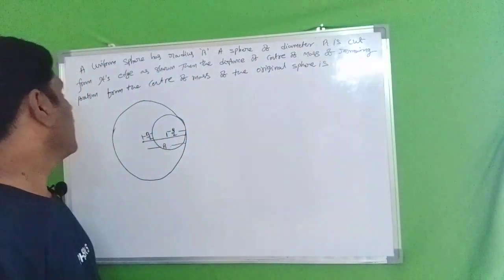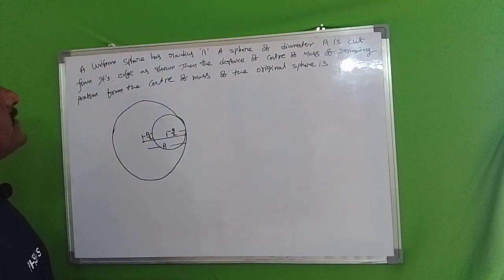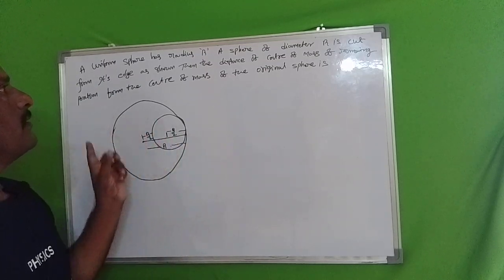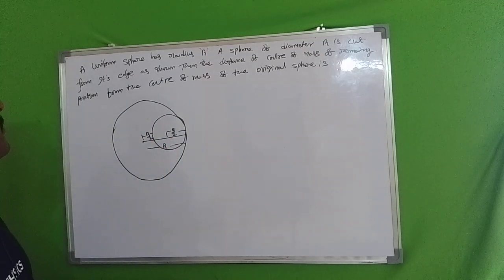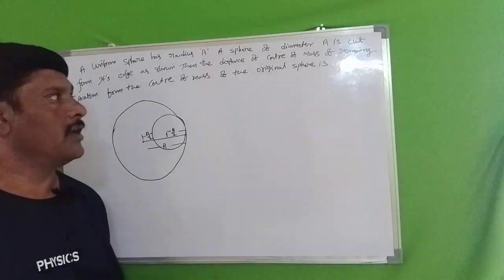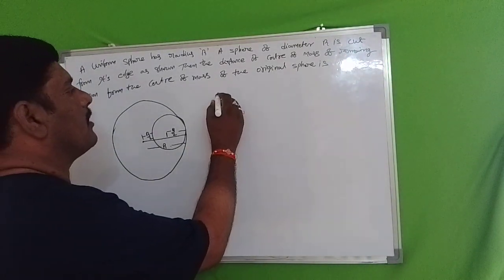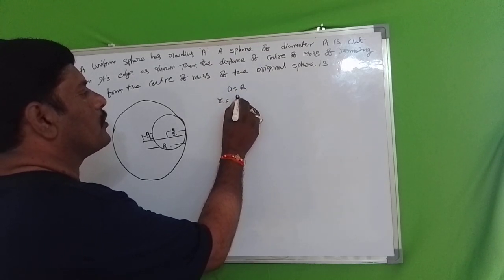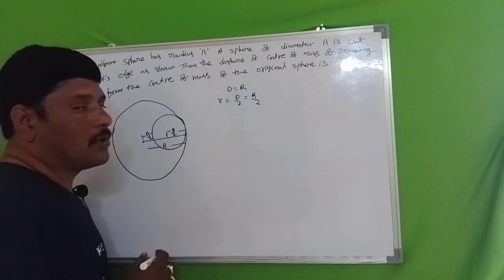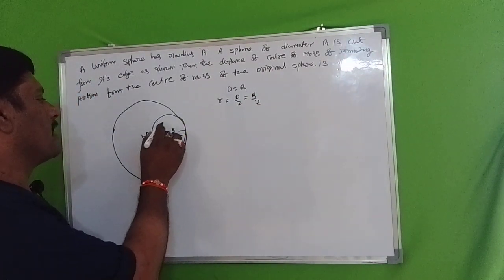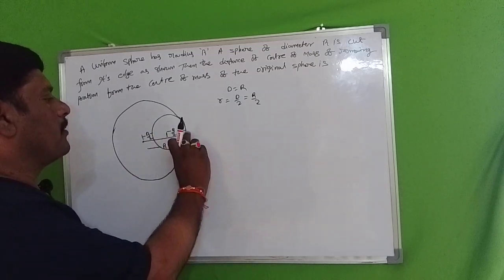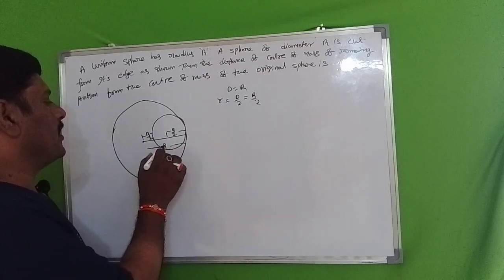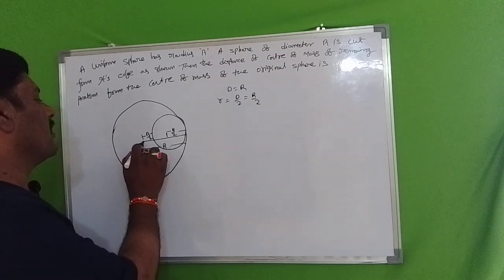The second problem: a uniform sphere of radius R. A sphere of diameter R is cut from its edge, as shown in the figure. Find the distance of the center of mass of the remaining portion from the center of mass of the original sphere. Since diameter equals R, the radius of the cut sphere is R/2.